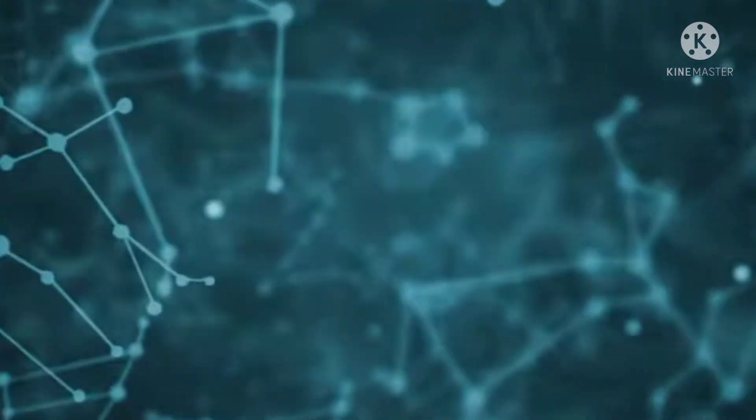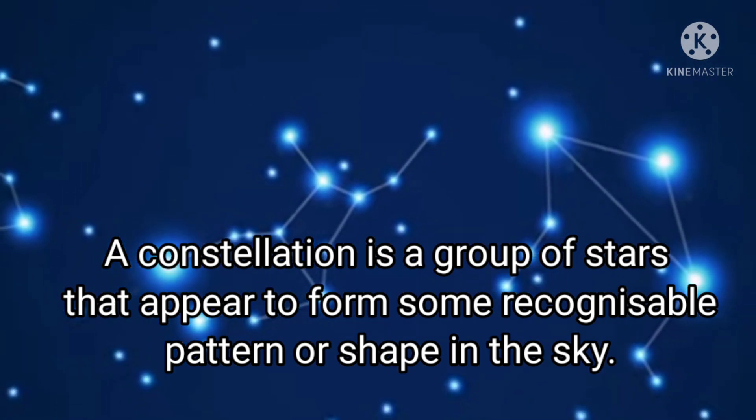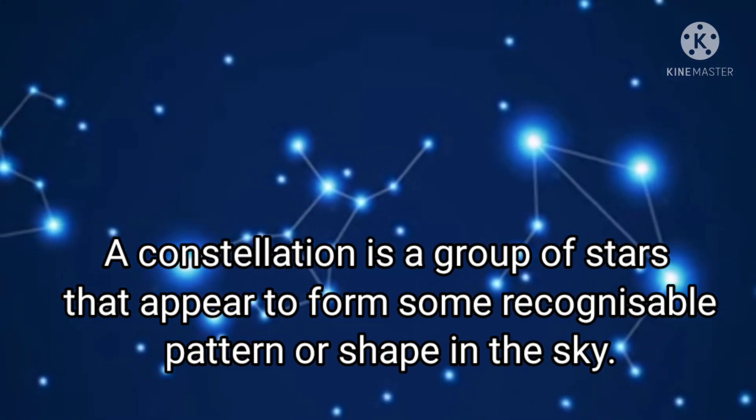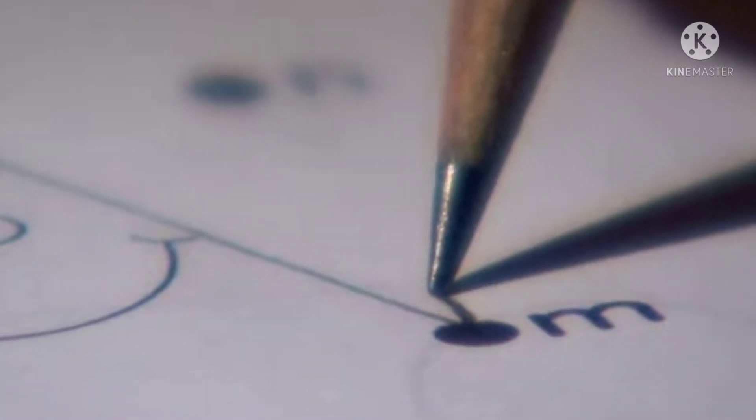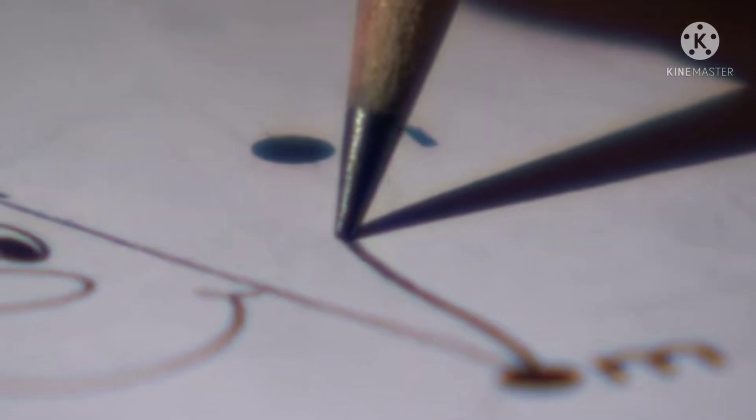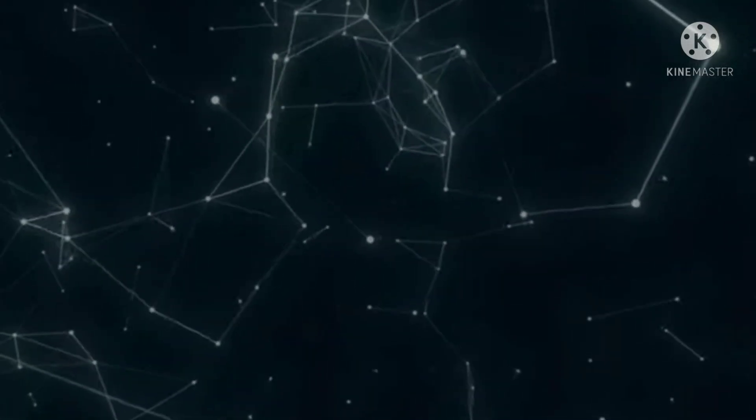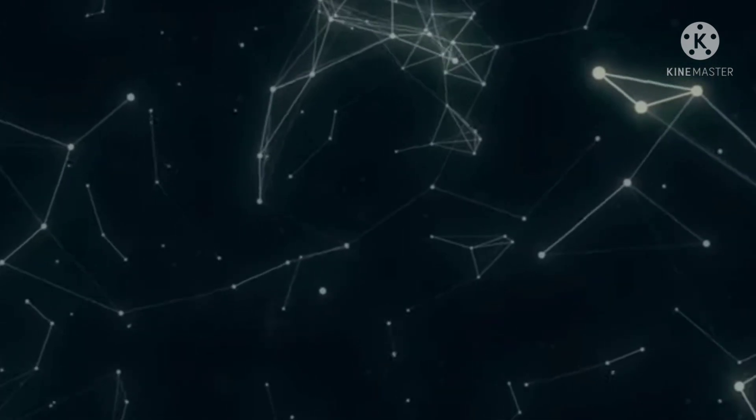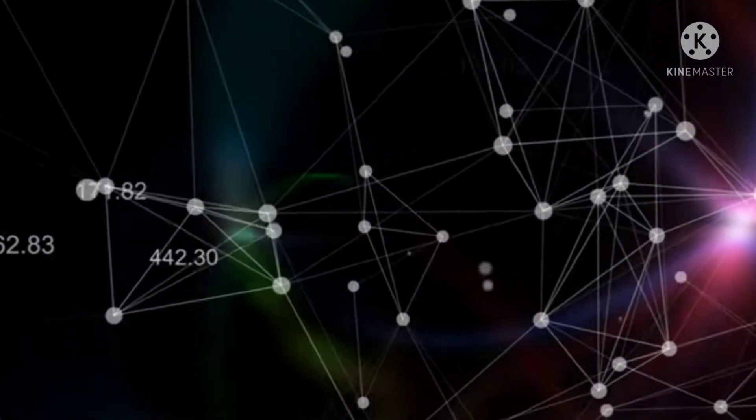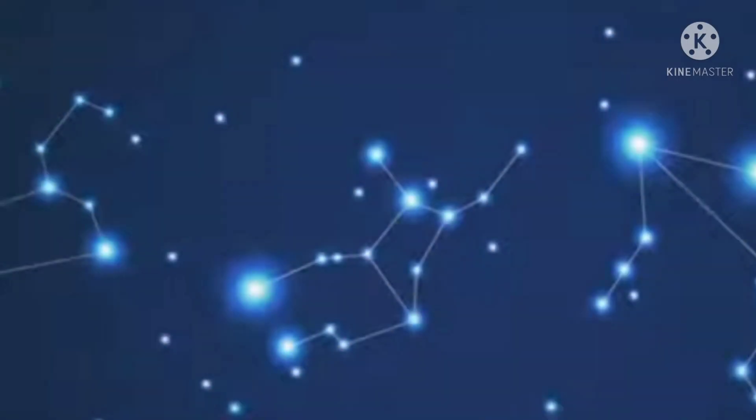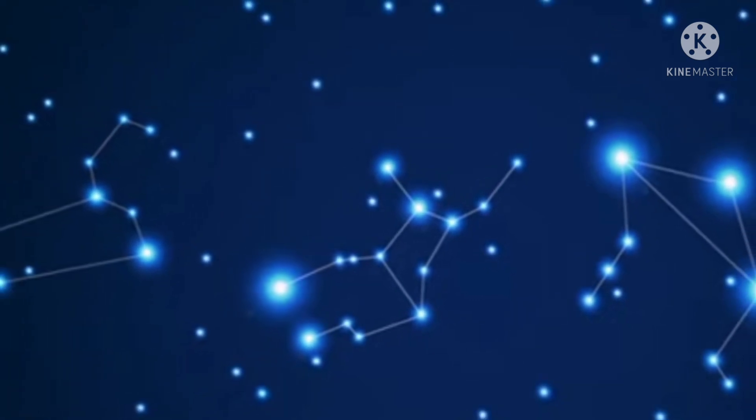Now let's move to the next topic, which is constellation. A constellation is a group of stars that appear to form some recognizable pattern or shape in the sky. Ancient people devised the concept of constellations so that they would be able to recognize and label some of the stars in the sky. This was important for them as they were dependent on these stars to find direction and to measure time.